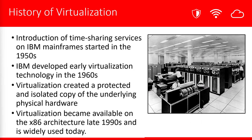Where did virtualization come from? If we look back at history, IBM mainframes have been around since the early 1950s. These mainframe systems are very expensive and very few businesses could afford them. So IBM introduced the idea of time-sharing services, which allowed multiple customers to use the mainframe systems at the same time. In the 1960s, IBM further developed this technology into what we now know as virtualization. The idea is that virtualization created a protected and isolated copy of the underlying physical hardware.